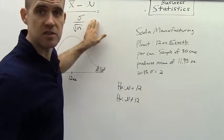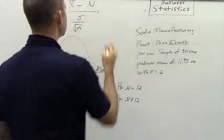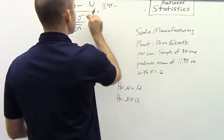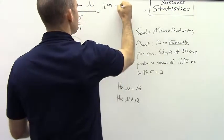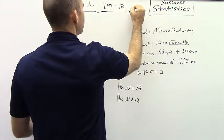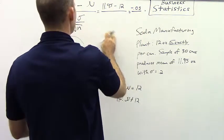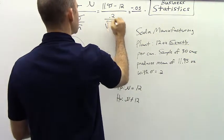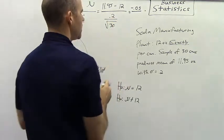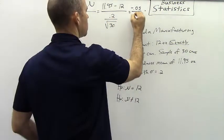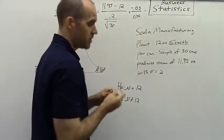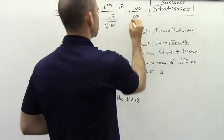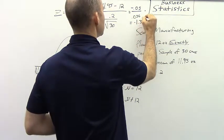So let's figure out a z-score first and foremost. So we're going to take our sample mean 11.95 and we're subtracting that from our actual mean and that is 12. So that gives us a value of negative 0.05. And then our standard error is going to be 0.2 divided by the square root of 30. And so 0.2 divided by the square root of 30 is 0.036. So negative 0.05 divided by 0.036 actually is a value of negative 1.39.